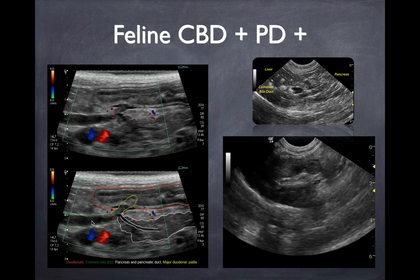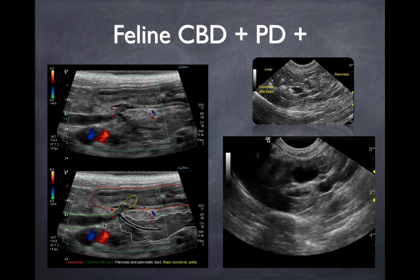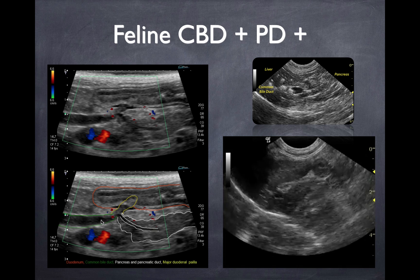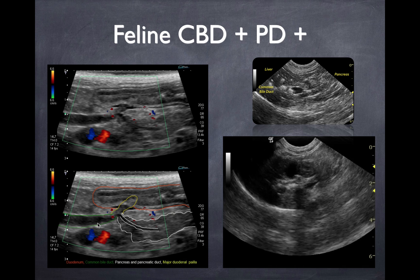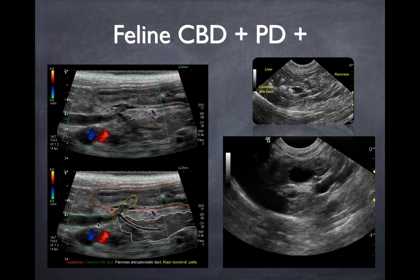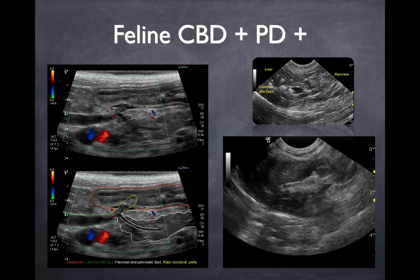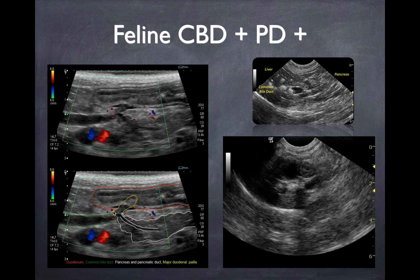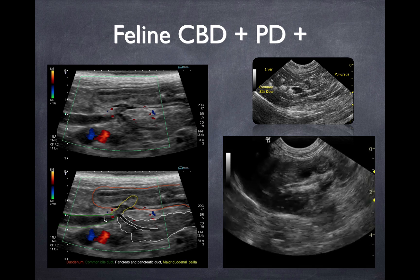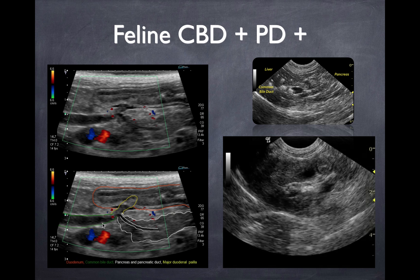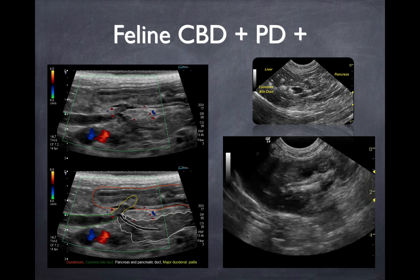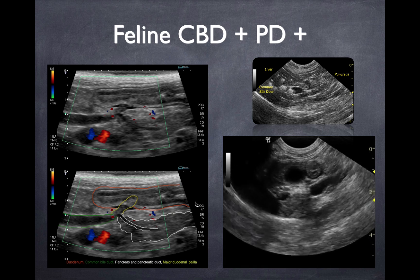This is a common area for biliary carcinomas in cats as well as mucus plugs. In dogs they can get tumors here, but they often get mucoduct changes that go along with mucocele. According to our study, clinical icterus was only present in a quarter of the population, and elevated bilirubin in about half of the population in surgical biliary disease. So you can have common bile duct disease without elevations in bilirubin, and it's important to evaluate this area.